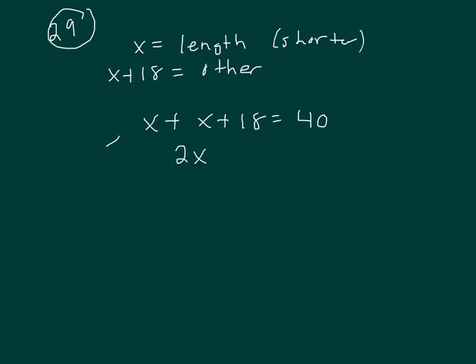So that's 2x plus 18 equals 40. Let's subtract 18 from both sides, and that gives you 22.